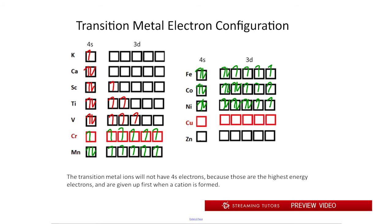And then we go to copper where we have another exception. We're going to have just one 4s electron and then a fully filled d orbital for the same reasons as chromium. And then finally zinc has a full 3d shell and a full 4s shell as well.